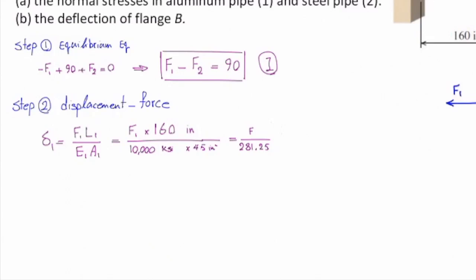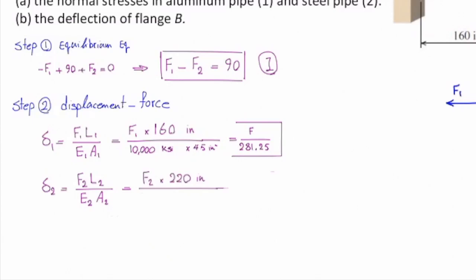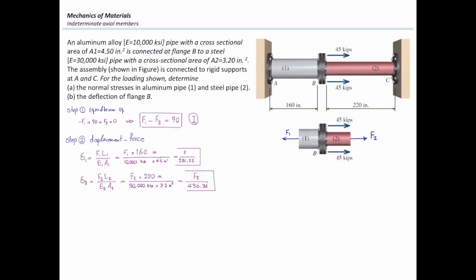Let's do the same for element number two. Using the same equation FL over EA with the parameters of that element: F2 times length of 220 inches, modulus of elasticity of 30,000 KSI, and area of 3.2 square inches. Simplifying gives delta two equals F2 divided by 436.36. So we have calculated deformation in each element one by one.